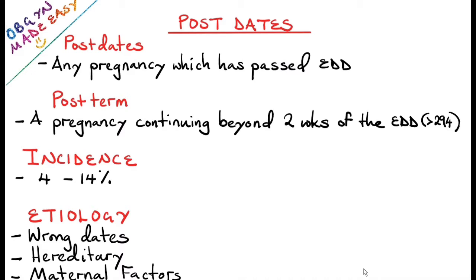Post-term pregnancy is also known as post-maturity. Post-dates is any pregnancy which has passed the expected date of delivery, and post-term pregnancy is a pregnancy continuing beyond two weeks of the expected date of delivery, which is more than 294 days from the last menstrual period. The incidence is about 4 to 14 percent, the average being 10 percent.